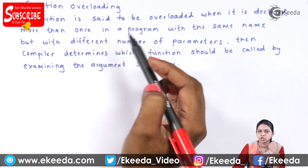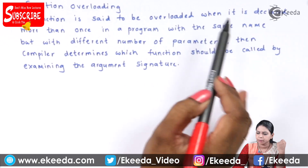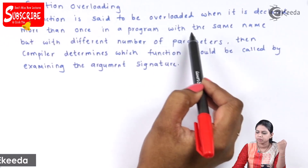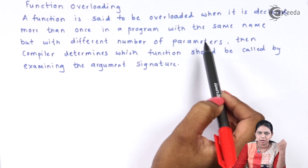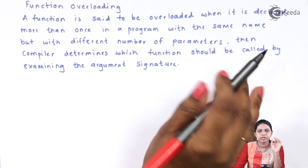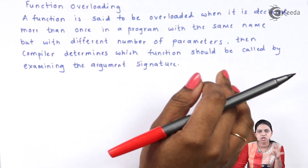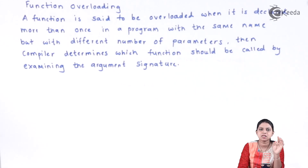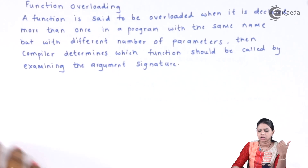So the definition of function overloading is: a function is said to be overloaded when it is declared more than once in a program with the same name but with a different number of parameters. In that case, how does the compiler invoke the correct function? The compiler matches the parameters and then the correct function gets invoked.